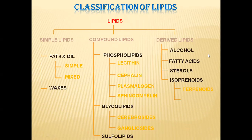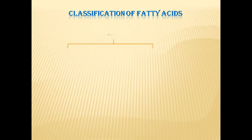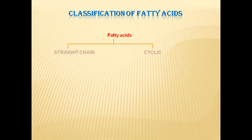And in isoprenoids, we have terpenoids and carotenoids. Coming to fatty acids — fatty acids are derived lipids. In fatty acids, two categories are present: one is straight-chain fatty acids, and the second group is cyclic fatty acids.